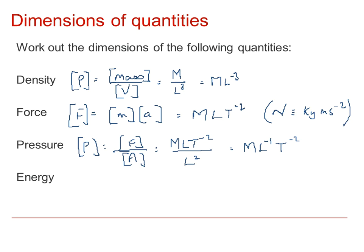Finally, energy. We've got kinetic energy as being a half M V squared. A half is just a number, so it's dimensionless. Therefore, the dimensions of energy, if we use M V squared, will be the dimensions of mass multiplied by the dimensions of V squared, velocity squared.